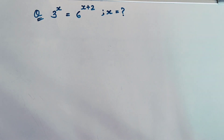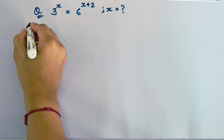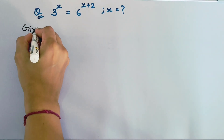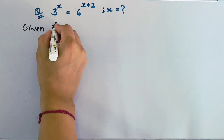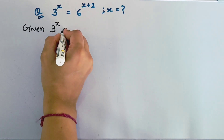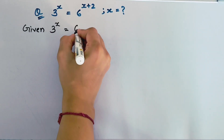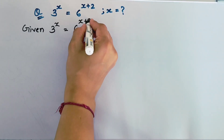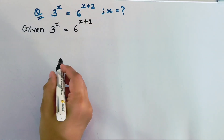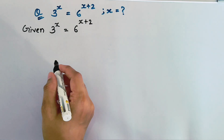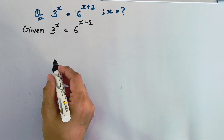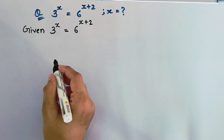We have given 3 to the power x equal to 6 to the power x plus 2, then find the value of x.